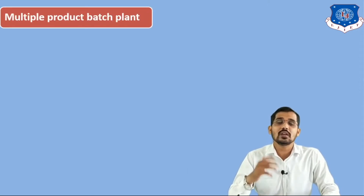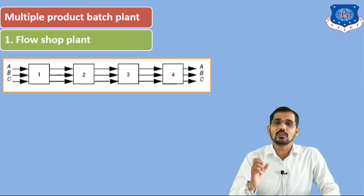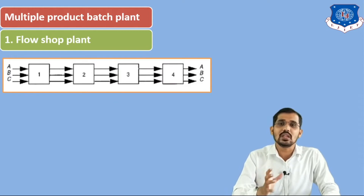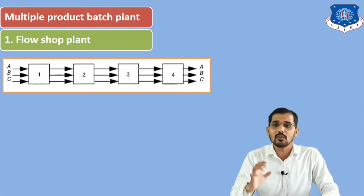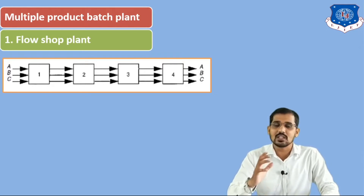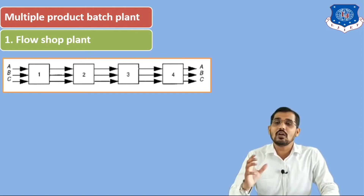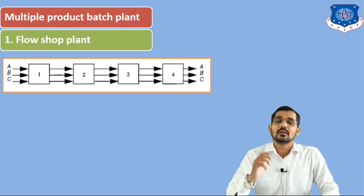Now we will see important diagrams for the flow shop plant and job shop plant. The first figure is the flow shop plant. According to this figure, there are different products such as product A, product B, and product C. The numbers 1, 2, 3, and 4 are nothing but the number of stages, and all arrows represent sequences. According to the flow shop plant, all products are similar in nature and require the same number of stages and the same sequence. You can see here all products — A, B, and C — require the same number of stages, which is 4, and all require the same sequences.